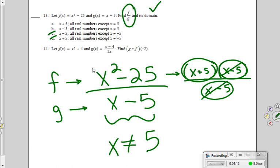So a is the right answer. x plus 5 where x is not allowed to be 5 because of what it looked like before you canceled.